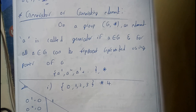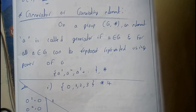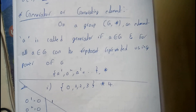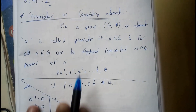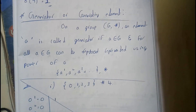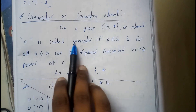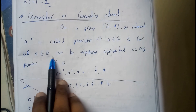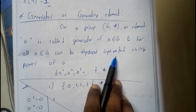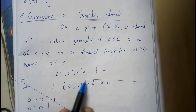In this tutorial, let's see what a generator or generating function is — not basic electronics, this is discrete mathematics. So we'll be calling it a generating element. In a group G with operation *, an element a is called a generator if a belongs to G and every element of G can be represented using powers a^1, a^2, and so on.